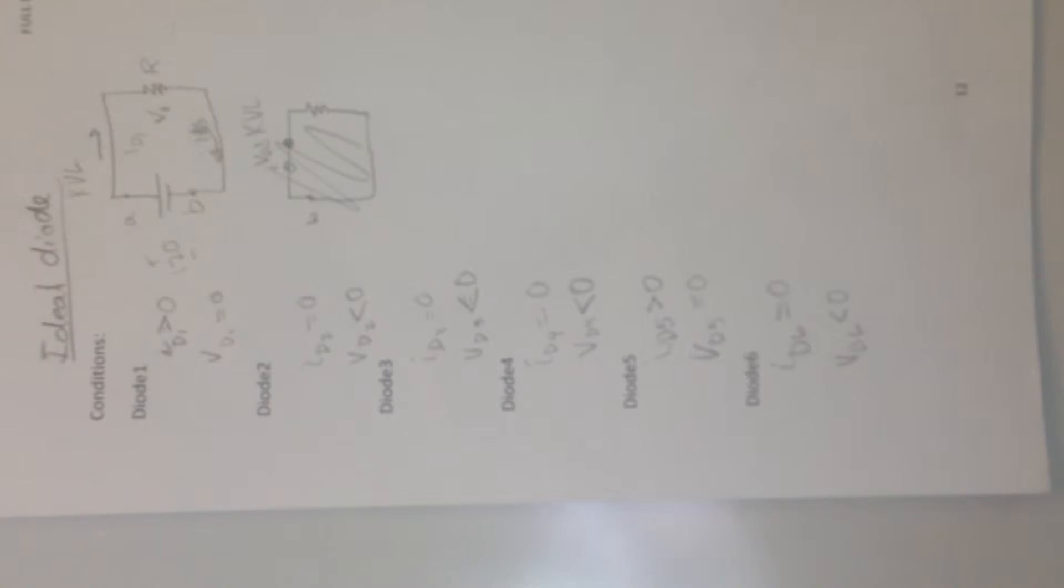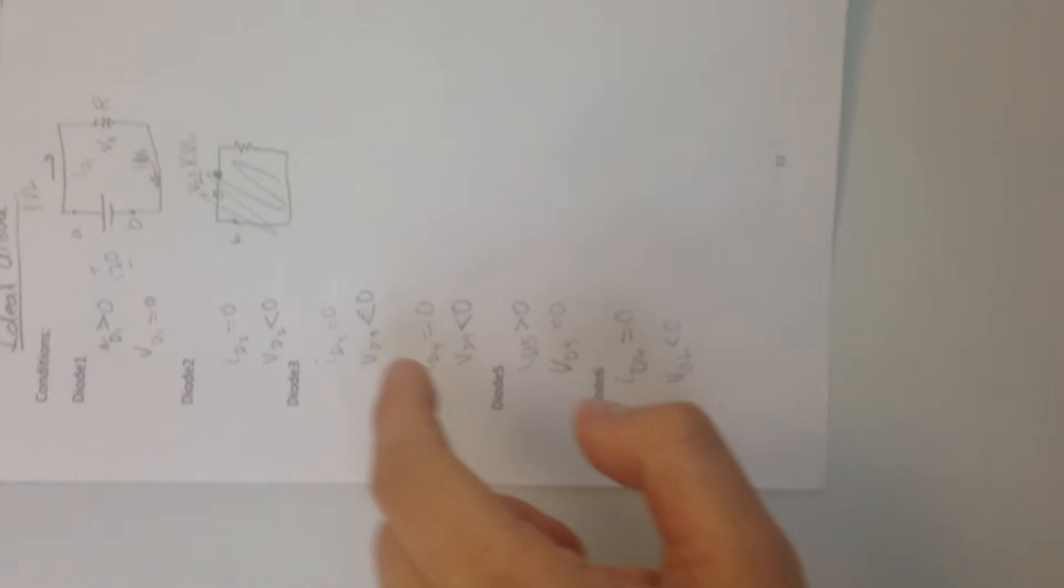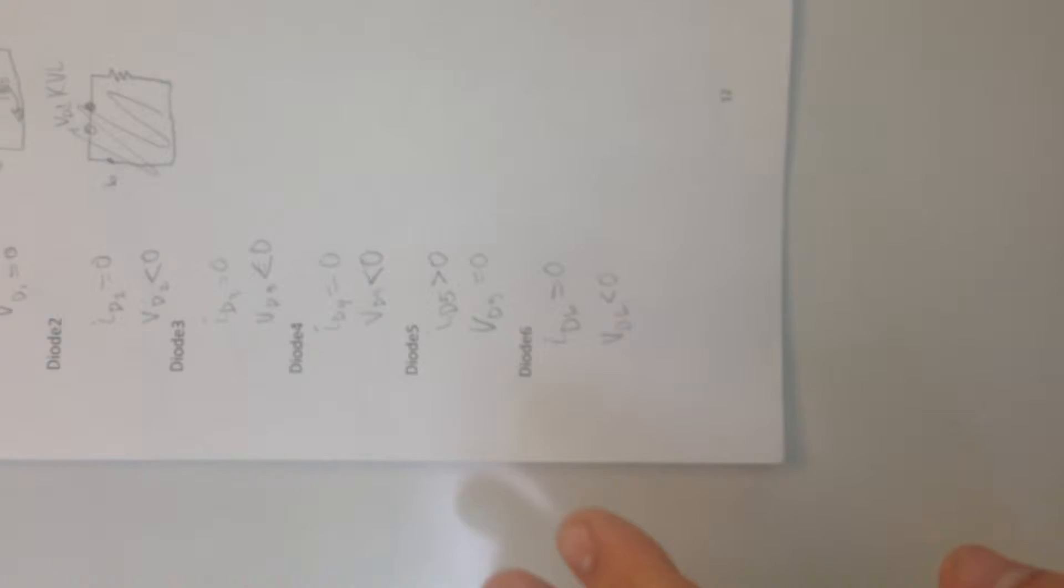So, we're going to test the conditions, and this page all it is is just showing ID1 is shorted, so that has positive current and a voltage is zero. And then, that's the same for ID5. And then, diode 2, 3, 4, and 6, all going to be negative voltage and zero current. And we can see that just by looking at it, so that's really nice, easy step.